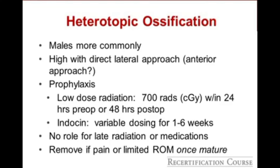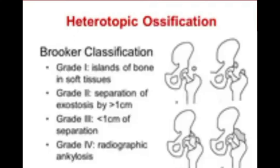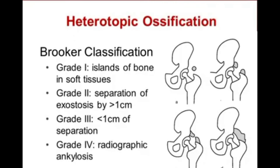For patients with mature heterotopic ossification causing pain or limited range of motion, surgical excision can be considered. The Brooker classification is commonly used — grade 4 means severe ossification to the point of ankylosis, while grade 1 is mild heterotopic ossification that does not limit range of motion or cause other problems.